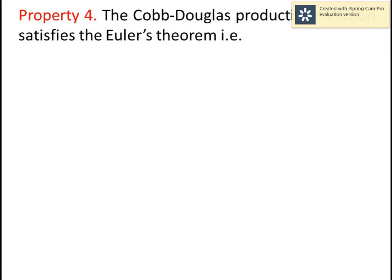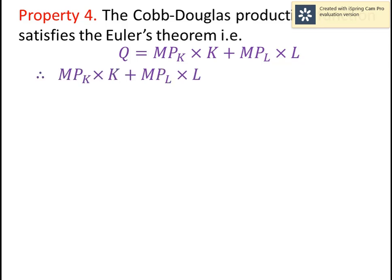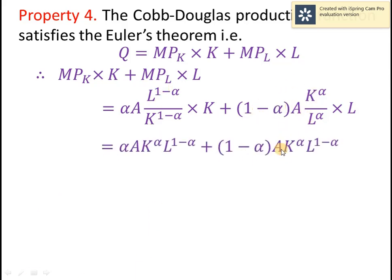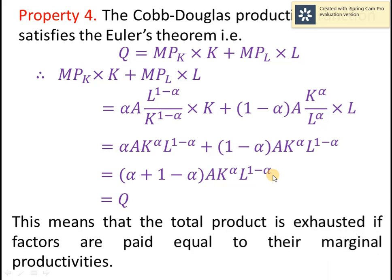Property 4: the Cobb-Douglas production function satisfies Euler's theorem. That is, q = MPK*k + MPL*l. Putting in the values of MPK and MPL and simplifying, we ultimately get q. This means that the total product is exhausted if factors are paid equal to their marginal productivity — that is Euler's theorem.